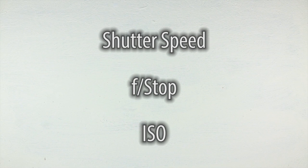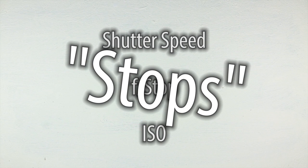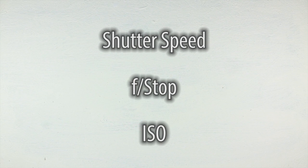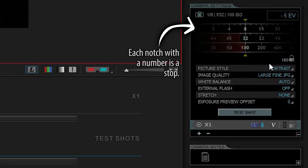So those are the basics for those three settings, but there's another thing. When you mess with each of these settings, there's something you have to do to maintain your image's brightness if you want to perhaps change the depth of field or something. You need to balance them out with each other, and there are things called stops that can help you. A stop is basically a segment of each of these settings, and on Dragonframe they're labeled so you can keep track.